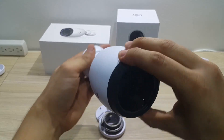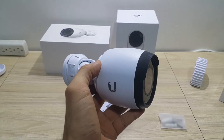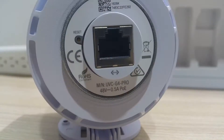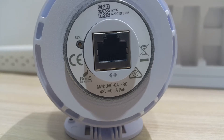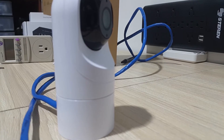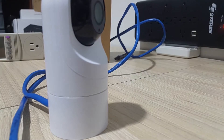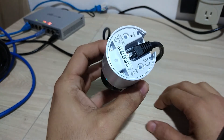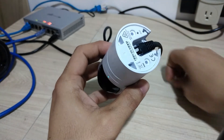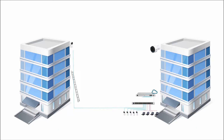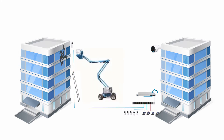Hello everyone, welcome back to Tech Moments. In this quick video we're going to see how to reset to default factory settings of the UniFi IP cameras. Usually we use this little reset button on these cameras to reset the devices, and it is a very foolproof process. It usually takes about 10 to 15 seconds — some people do 30 seconds, but 15 seconds is enough for these cameras to reset.